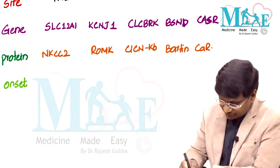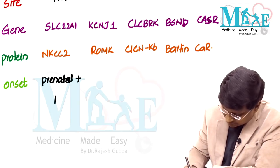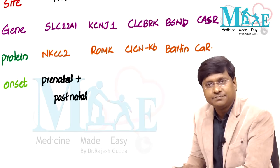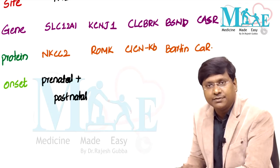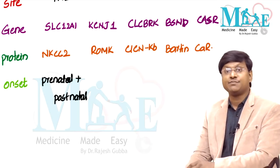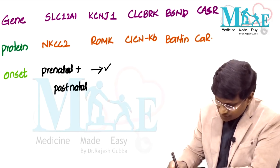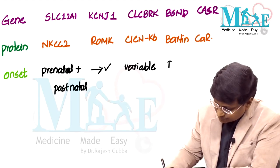The prenatal presentation involves maternal polyhydramnios because the child excretes large quantities of water as polyuria, which enters the amniotic fluid. Types 1 and 2 Bartter have prenatal and postnatal onset; type 3 is variable; type 4 is prenatal and postnatal; type 5 is variable.